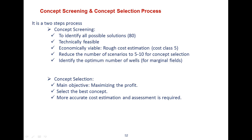The main objective of concept screening is to identify all possible solutions — potentially 80 to 150 scenarios — then perform technical feasibility to select technically viable solutions, and make an economic evaluation with rough Class 5 cost estimation, reducing scenarios to 5 to 10 for concept selection. Sometimes the number of production wells is also an optimization parameter. In concept selection, the main objective is maximizing profit (net present value) and reducing net present investment, requiring more accurate cost estimation and assessment methodology.